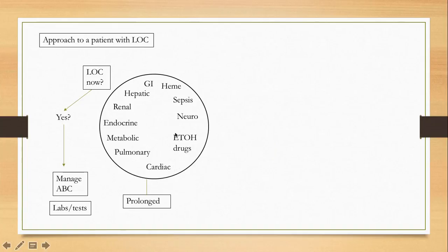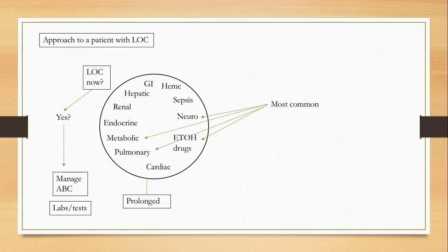If the patient has prolonged loss of consciousness and you're thinking about systemic problems, there are many different things to look for in history and physical exam. The most common systemic causes of prolonged loss of consciousness are metabolic, alcohol and drugs, pulmonary, neurological, and cardiac causes. If the patient is unconscious at presentation — which is likely because they haven't been able to compensate for the original pathology — you will first do ABCs.